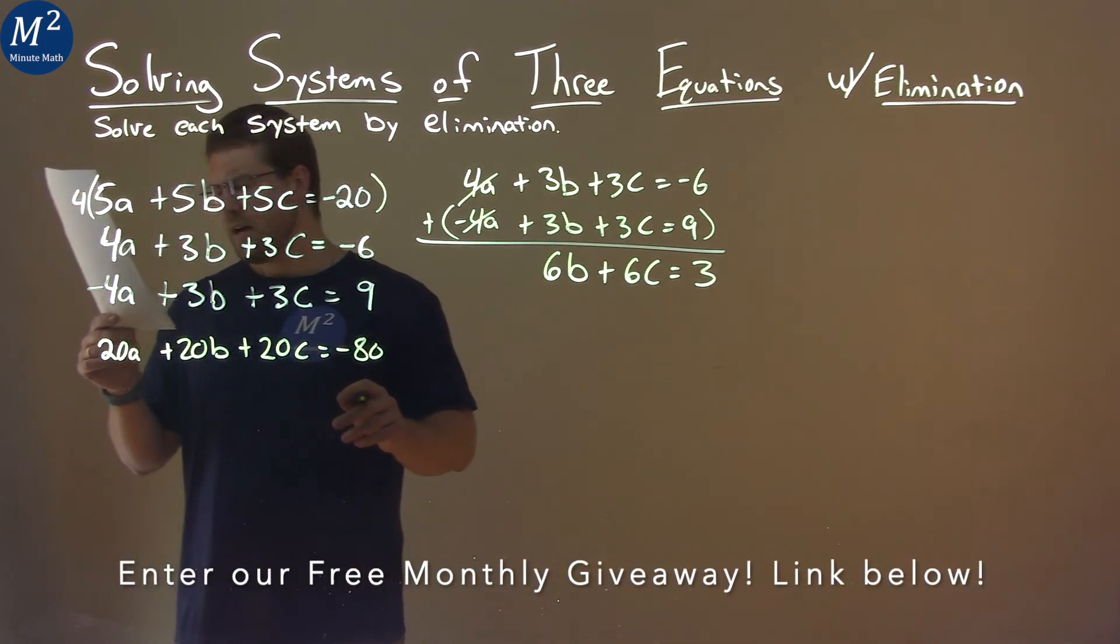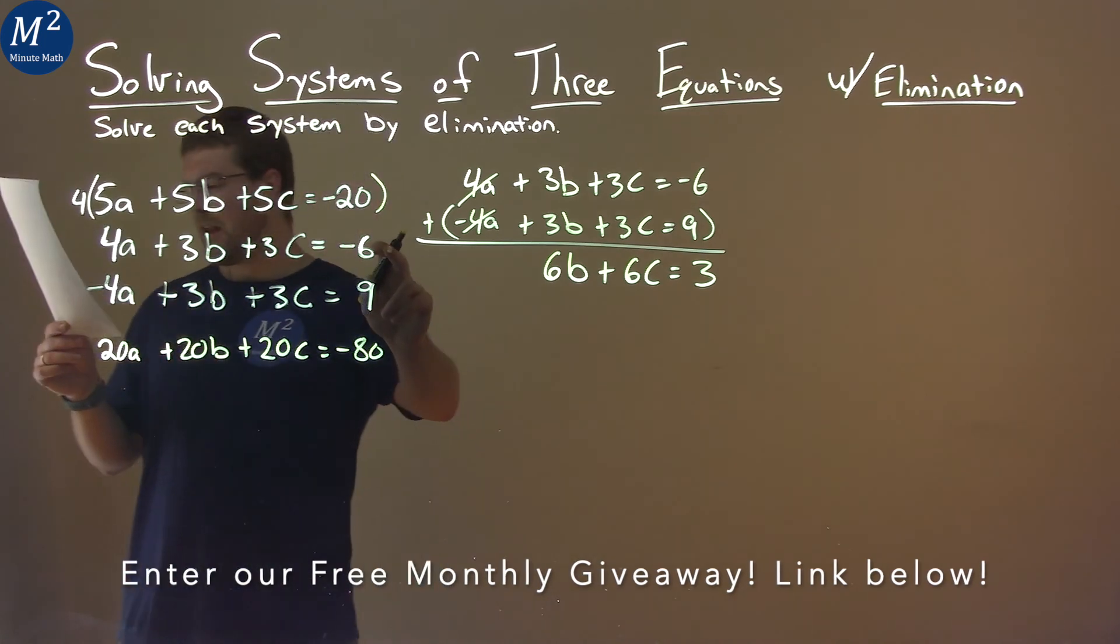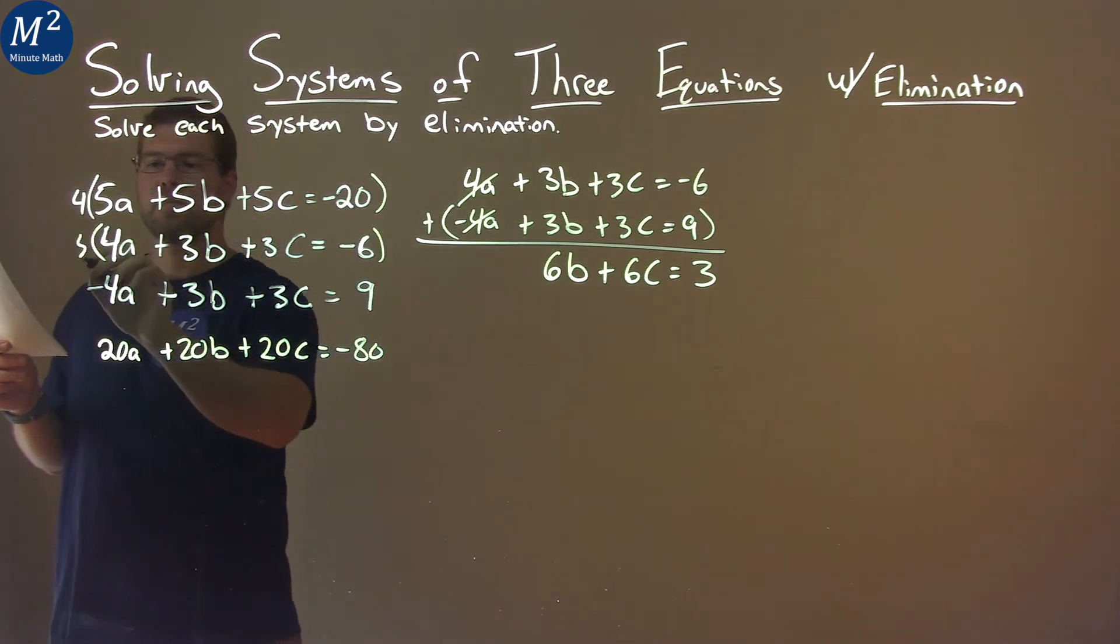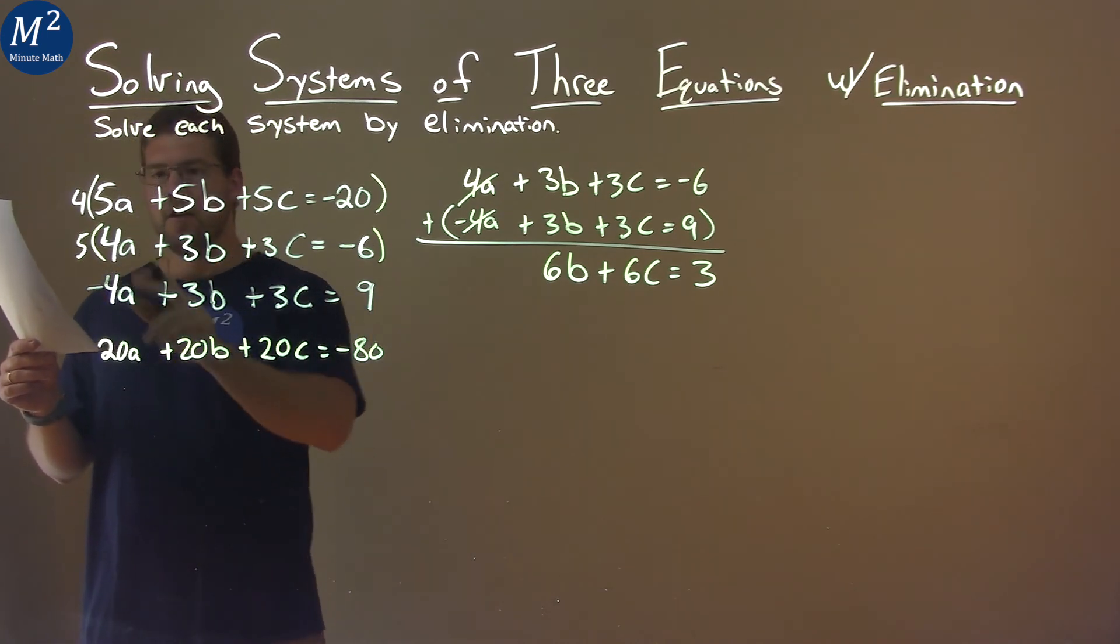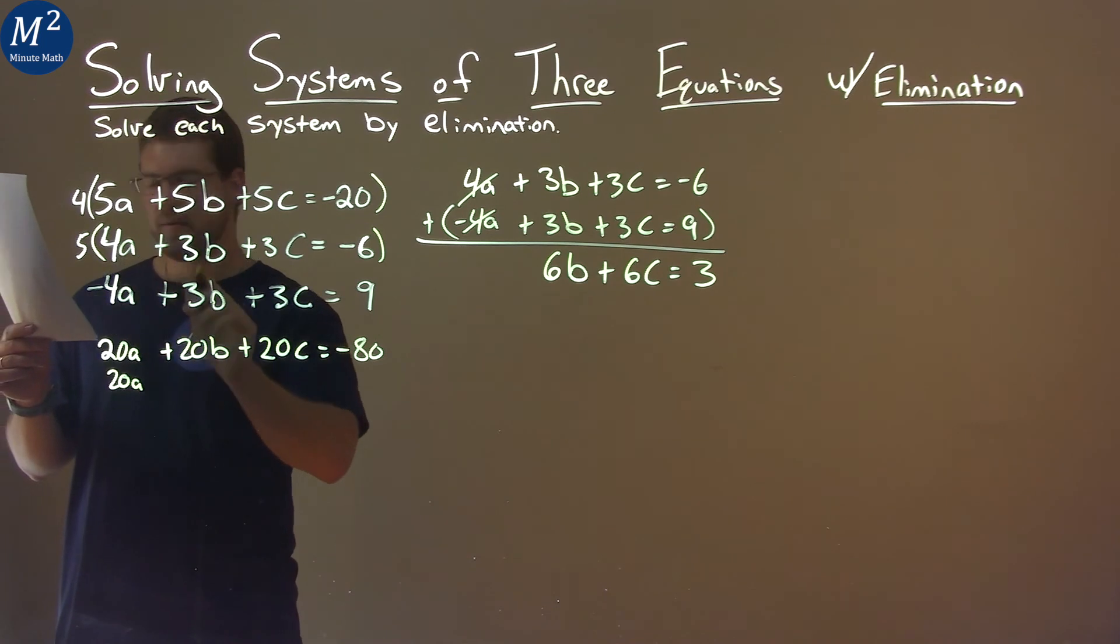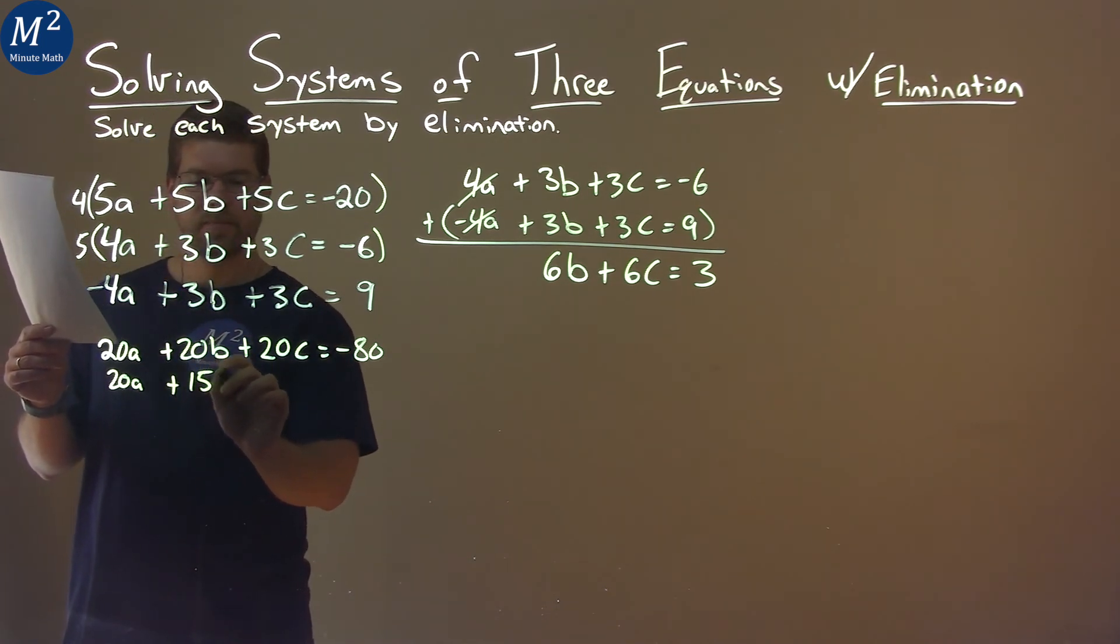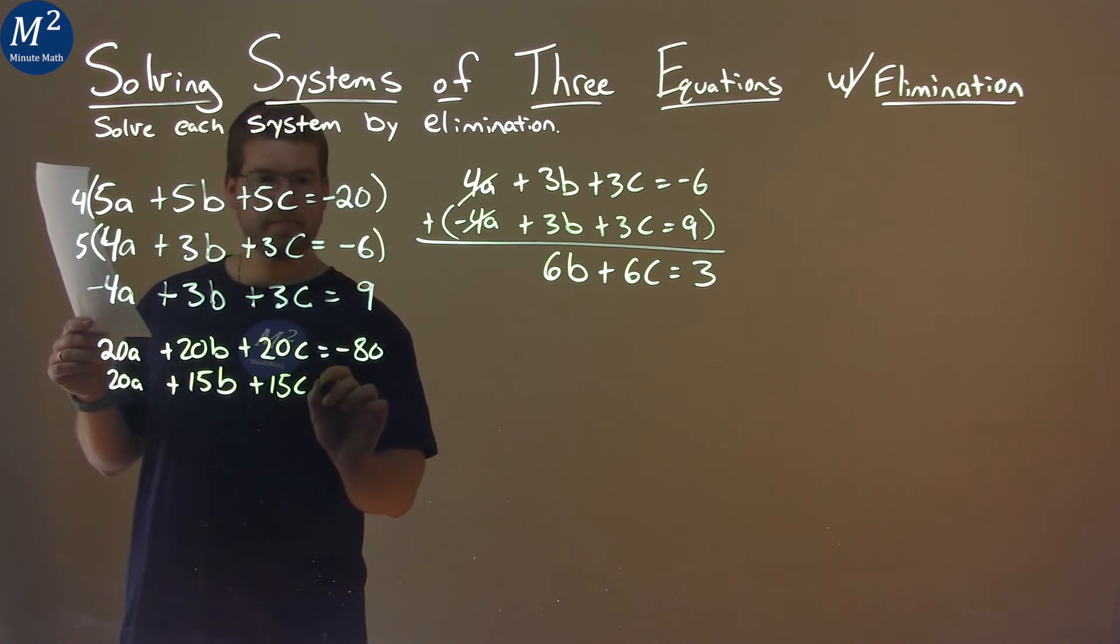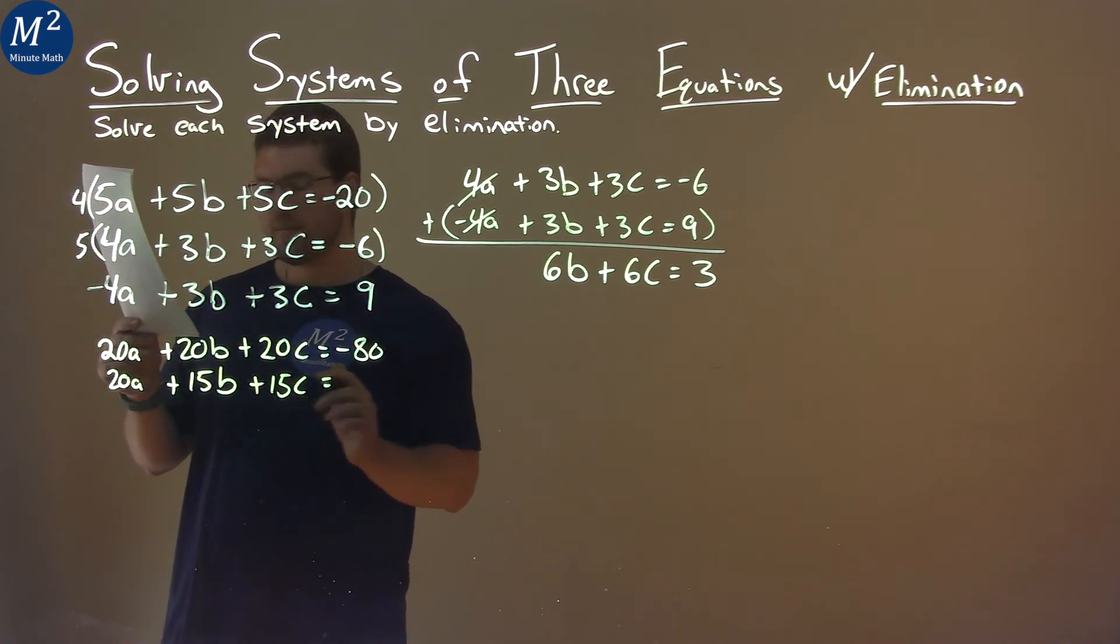If I take my second equation here and I multiply that by 5, look what happens. 5 times 4a is 20a. 5 times 3b is 15b. 5 times 3c is 15c. And 5 times negative 6 is negative 30.